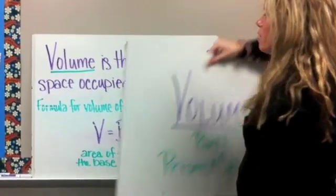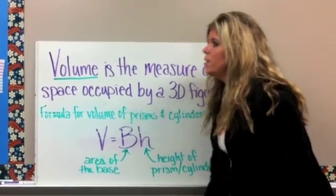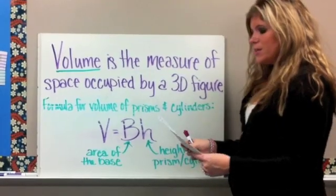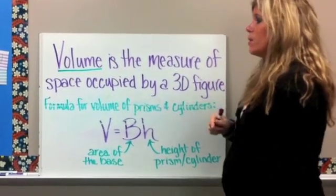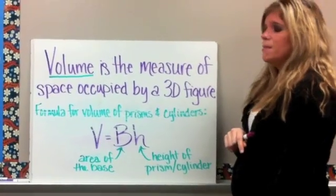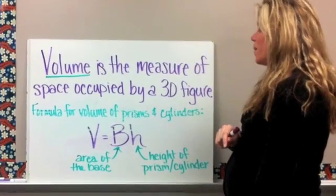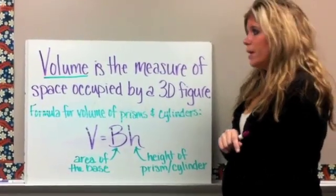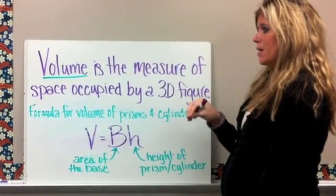You should have your note sheet ready, your Cornell note sheet. The first question says, what is volume, and I want you to answer that question with this definition here: volume is the measure of space occupied by a 3D figure. So we're talking about the space on the inside.